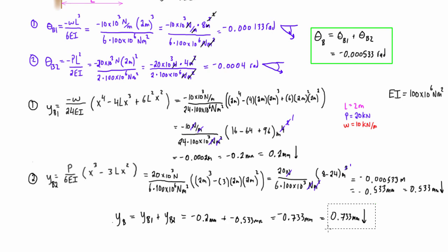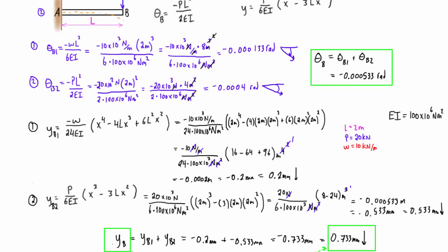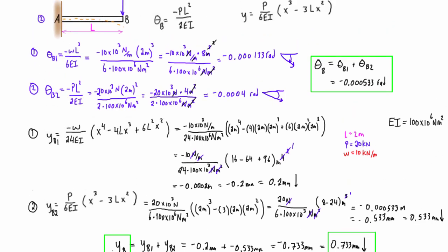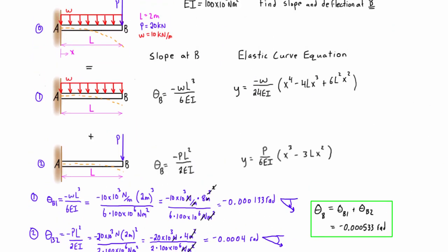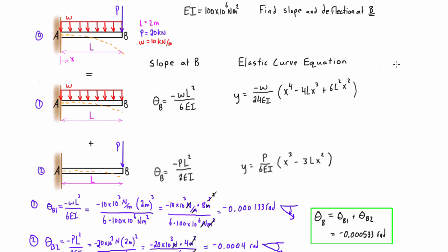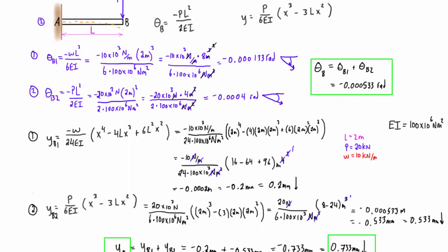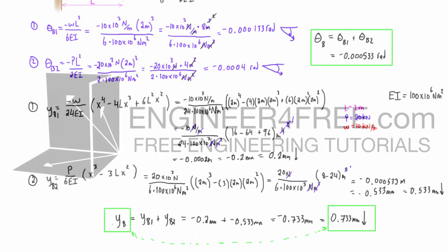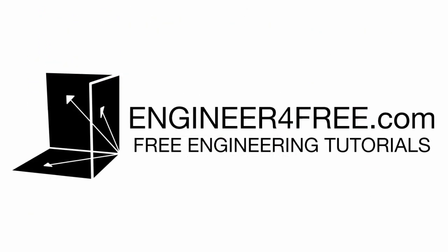Let's put a green box around that answer. So that is the total deflection at point B and the total slope at point B, solved using the method of superposition — which you can see graphically, or confirm through the math.